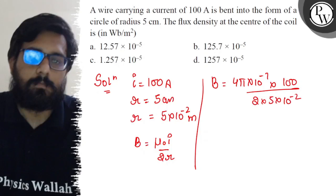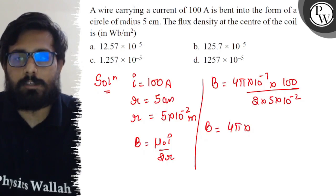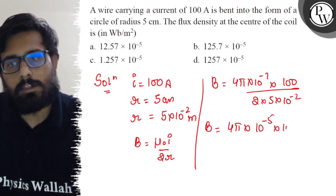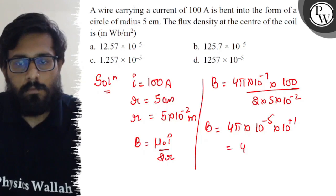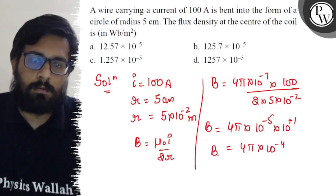B comes out to be 4π × 10⁻⁷ × 10² / (10 × 10⁻²), which simplifies to 4π × 10⁻⁴. Putting the value of π, this is going to simplify so you will get a value of 125.7 × 10⁻⁵.